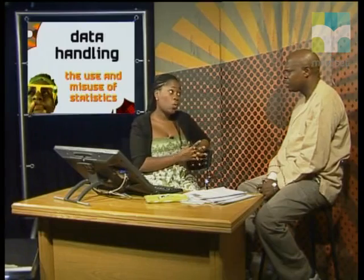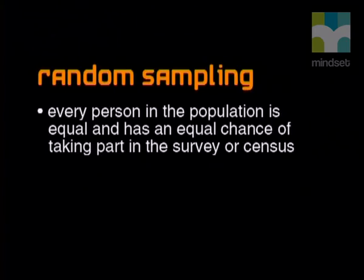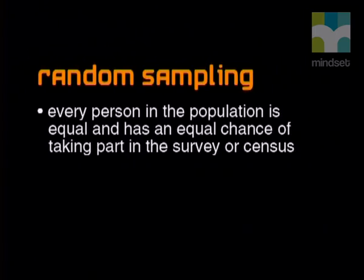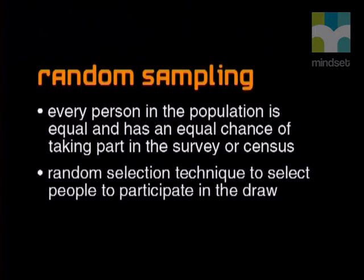Remember when I explained the concept of sampling, where we use a small portion of the population to represent the whole population? The way in which you do the sampling can affect the data and either create bias or prevent it. There are different ways to do the sampling — I'll quickly explain five methods. The first is called random sampling. Random sampling works on the idea that every person in the population is equal and has an equal chance of taking part in the survey or census. We then use a random selection technique to select people to participate.